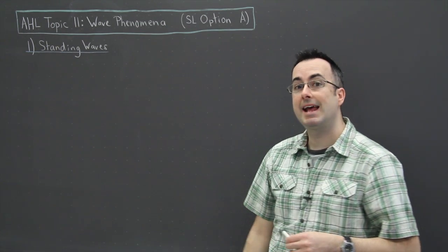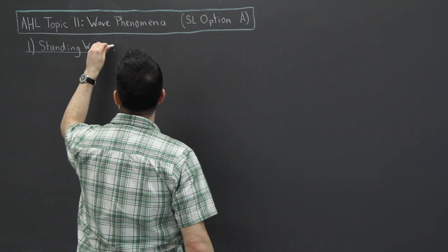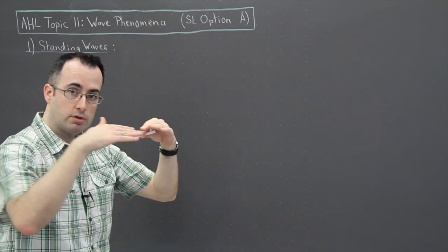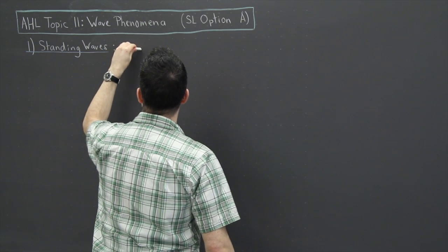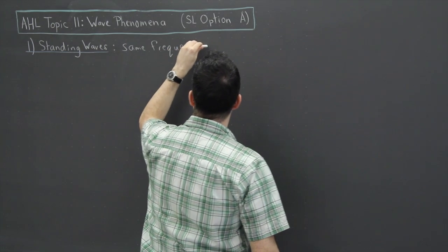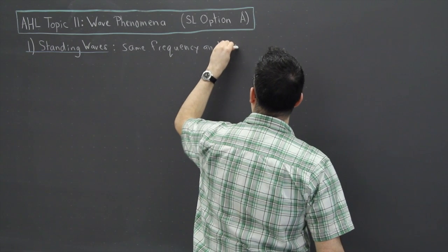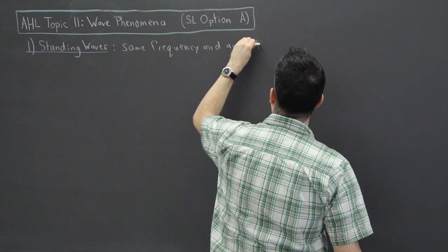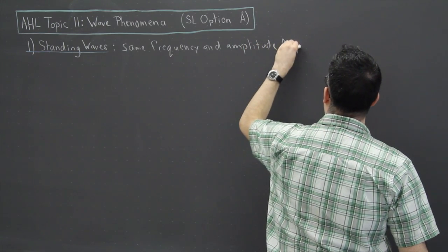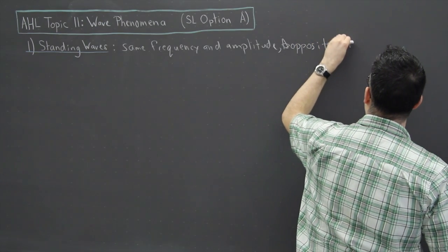But I'm going to go over standing waves. So a standing wave, this could be two different waves that have the same frequency and amplitude. But the key thing is, they're both moving in opposite directions. That's the key thing here in standing waves.